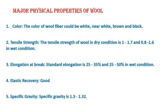Tensile strength of wool in dry condition is 1 to 1.7, and in wet condition is 0.8 to 1.6. Number three is elongation at break — that is, up to what extent we can elongate it before it breaks, sometimes called stretchability. Standard elongation is 25 to 35% of the length in dry condition, and 25 to 50% in wet condition. Number four is elastic recovery — to what extent we can stretch it and it returns to normal, which is quite good in wool compared to other fibers.